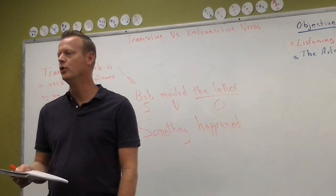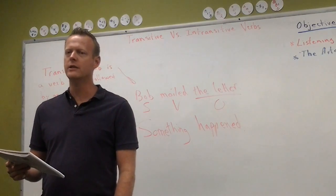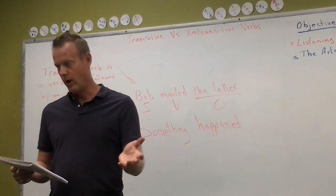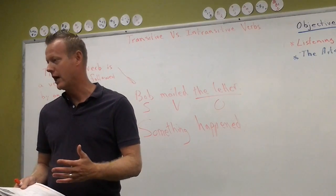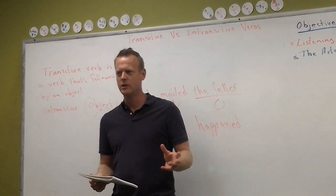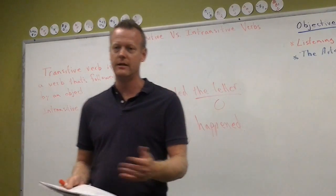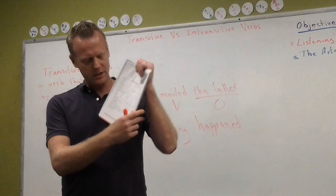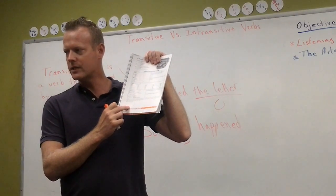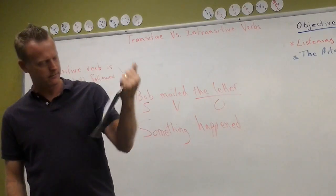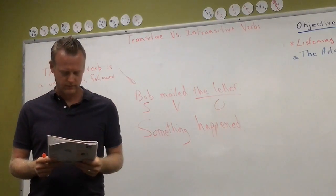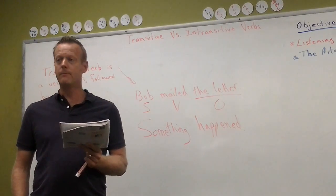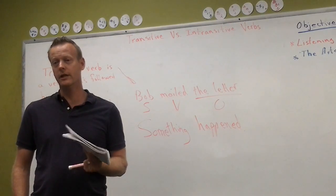So the question is: how do you know if a verb is transitive or intransitive for sure, 100%? You can look to see if it's using an object or not, but that's not always useful because sometimes you can put an object on it and make it transitive or leave it off. The best way is to look in your dictionary.